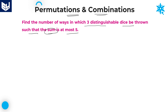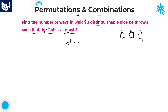The condition given is that the sum is at most 5 when three dice are thrown. When throwing three dice, the maximum number on each die is 6 and the minimum number is 1, so the numbers on a die are from 1 to 6. To solve this kind of problem, you must know the meaning of 'at most' and 'at least'. At most means maximum, whereas at least means minimum.